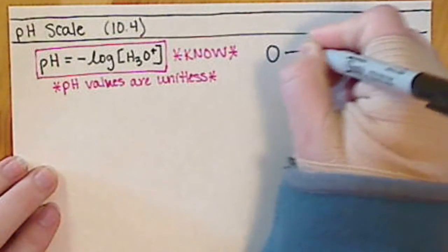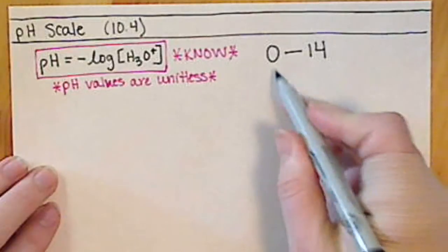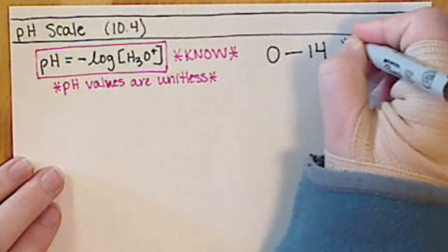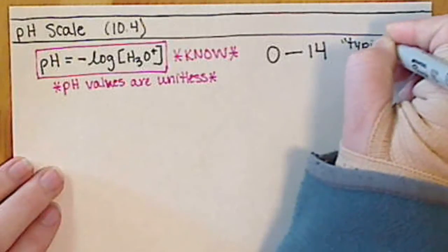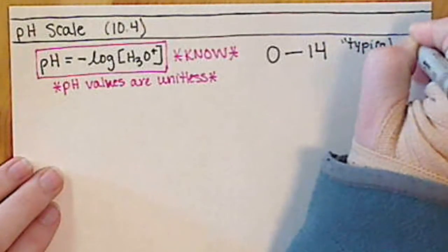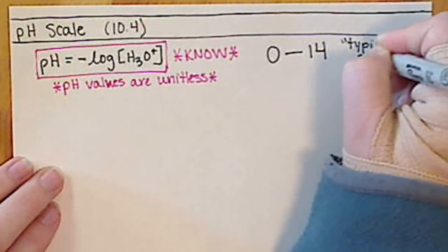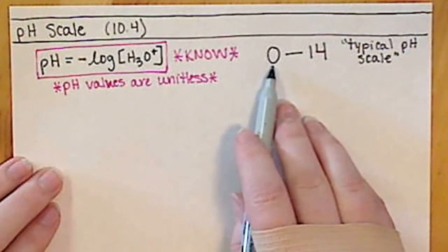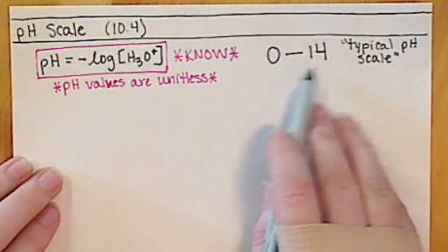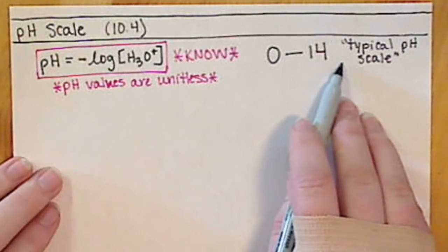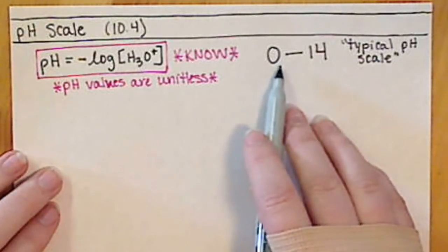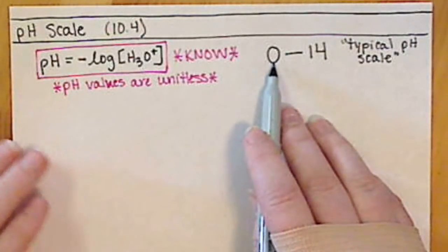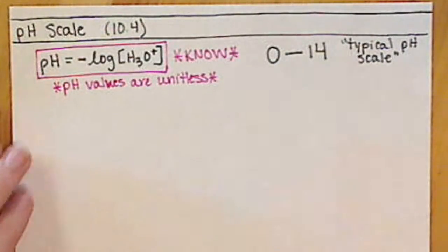This is our typical pH scale. We can have values that are beyond that — we can have values that go negative, or higher than 14 — but for the most part, we're going to be dealing with pH values between 0 and 14.